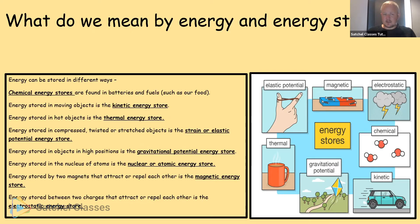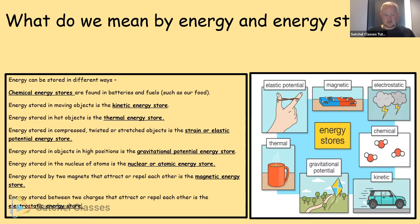Energy stored in objects at high positions is the gravitational potential energy store — the higher up something is, the more gravitational potential energy it stores. Energy stored in the nucleus of atoms is the nuclear or atomic energy store. Energy stored by two magnets in each other's field is the magnetic energy store. Energy stored between two charges that attract or repel each other is the electrostatic energy store.